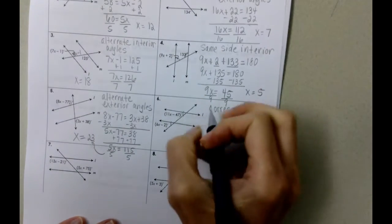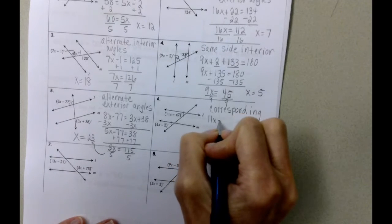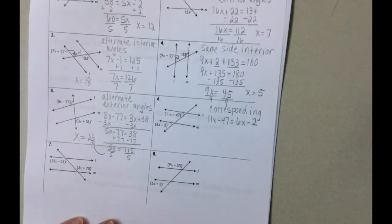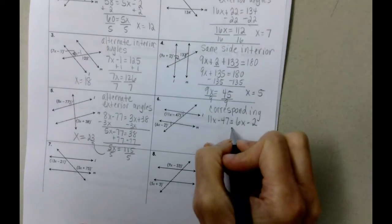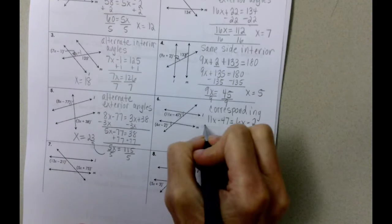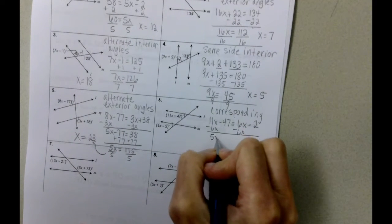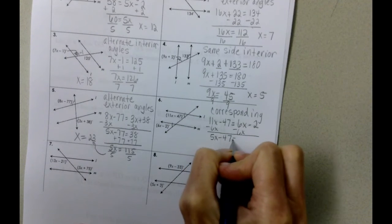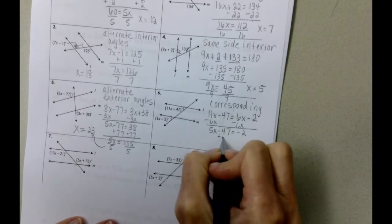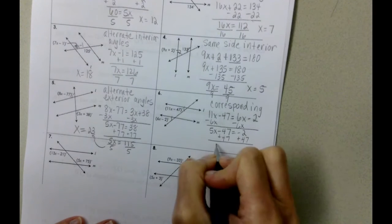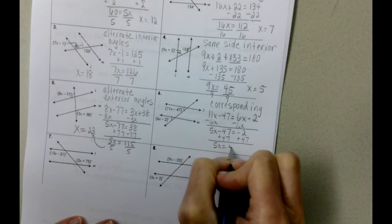And what we know about corresponding angles is that they are equal. Again, solve this the way your algebra 1 teacher taught you. I'm going to move my letter to the left and get 5X minus 47 equals negative 2. Add 47 to both sides. And we get 5X equals 45.